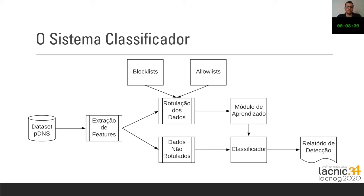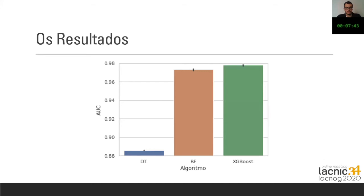After training and learning the algorithms, they were ready to produce a detection report. We used unlabeled data and sent it to the classifier. Based on the data obtained through the algorithms, this leads to obtaining a detection report. The results we obtained were the following.